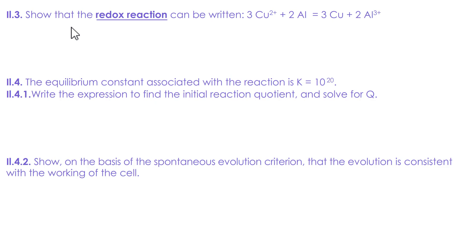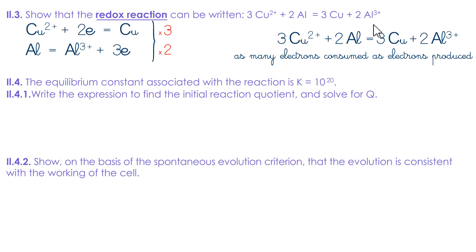Show how the transformation between the two couples can be written. It takes as many electrons captured as electrons emitted. We multiply here by 3, and there by 2.